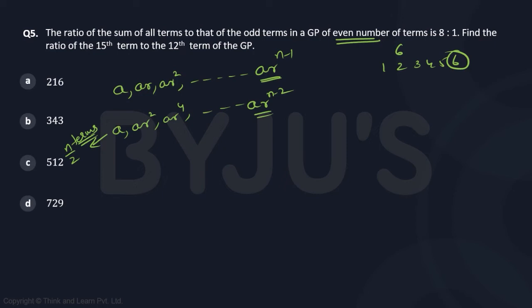Now, the ratio of these two: the total sum Sₙ is a(1-rⁿ)/(1-r), divided by S_odd, which is again, the first term is a, times 1 minus... Now, the common ratio, however, is r².